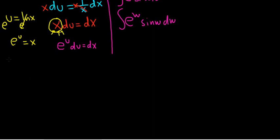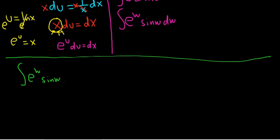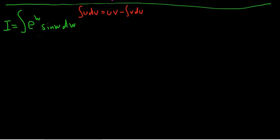And I'm going to rewrite what we have. So we have the integral of e to the w sine w dw. And we have to integrate this, so I'm going to call it i. And I'll go ahead and write the formula for parts right up here one more time so we see it. So the integral of u dv is equal to u v minus the integral of v du. All right, let me scroll down. Good stuff.